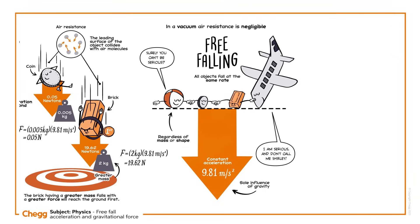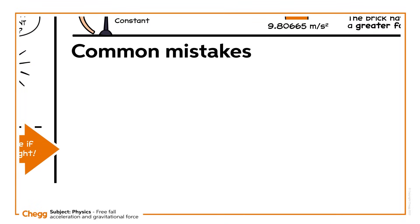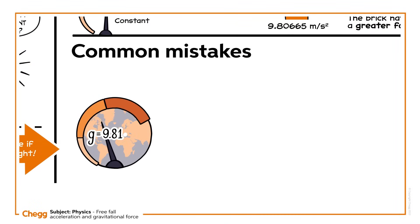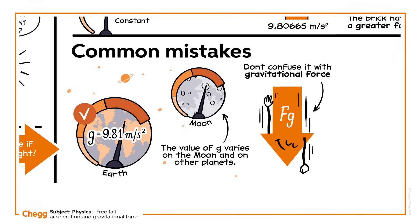Therefore, in answer to our initial question, if you were to drop a coin and a brick in a vacuum, they would have identical accelerations and would reach the ground in tandem because they are free-falling. We learned that acceleration due to gravity is approximately 9.81 meters per second squared, but this is only true near the Earth. The value of g varies on the Moon and on other planets. While g is always 9.81 on Earth, don't confuse it with gravitational force, Fg, which varies with the mass of the object.